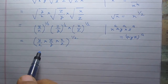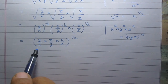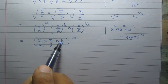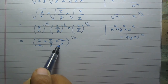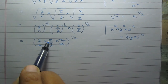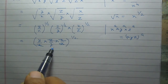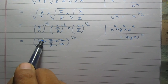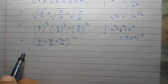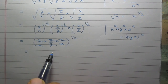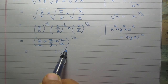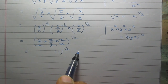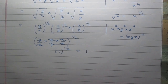Now inside the bracket the terms will be reduced: x is cancelled by x, z is cancelled by z, y is cancelled by y. So the result inside the bracket is 1, giving us 1 raised to the power 1 by 2, which is 1 itself.